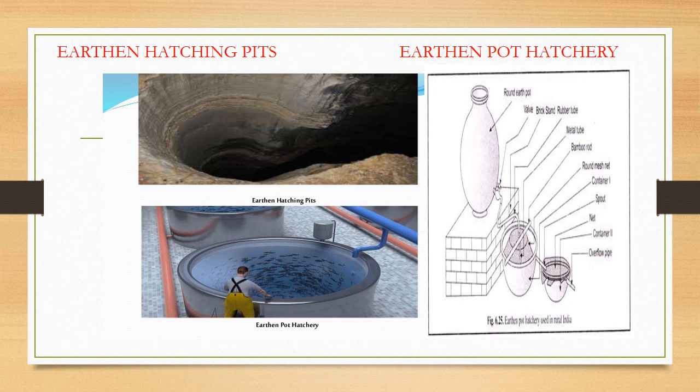Then, earthen pot hatchery. There are pots which we arrange in particular rows. Fertilized eggs are put in earthen pots arranged in a particular way. It is cheap and easily replaceable. However, its disadvantage is that it is opaque — not transparent — so we cannot look inside the pot.